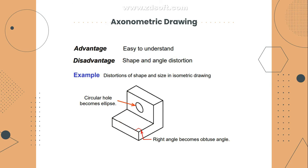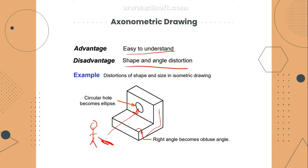The advantage of axonometric drawing is that it is easy to understand — it is three-dimensional, so we have depth with length, width, and height, and you can already see what the part looks like. The disadvantage is that there is shape and angle distortion because it is in an isometric view, usually at 45 or 120 degrees. Right angles become obtuse angles, and circles become ellipses. Looking at it from the observer's position, you see the front view, right side view, and top view simultaneously.